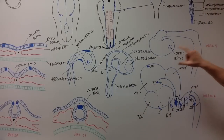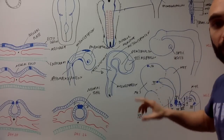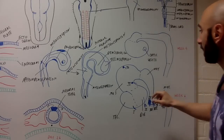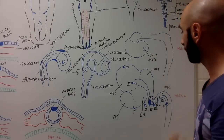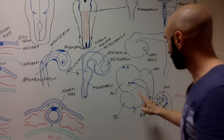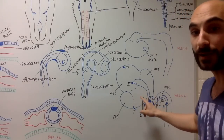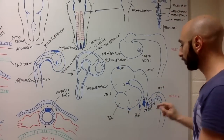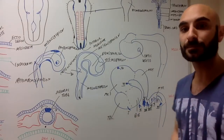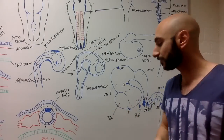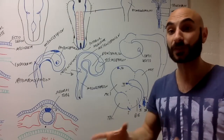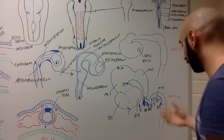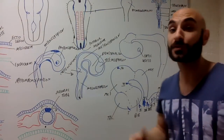By week four, we'll have a brain that looks something like this, with the optic vesicle visible there. And by week six it looks like the next image shown. I'd like to focus on this briefly because I want to discuss the cranial nerves — it's very important in the development of the central nervous system.